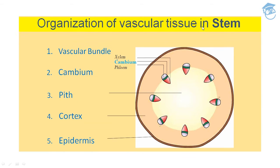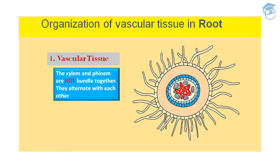Now we'll talk about the organization of vascular tissue in roots. In the root, vascular tissue — that is, xylem and phloem — are not bundled together unlike in the stem. Instead, xylem and phloem alternate with each other in separate patches. This is phloem, this is xylem, this is again phloem, this is xylem — they are arranged in an alternating pattern.